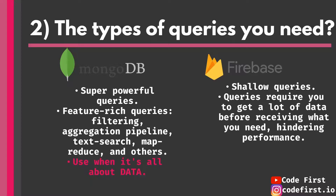If your app is really data-centric and data is super important to you, go with MongoDB. Firebase, on the other hand, has shallow queries. With the real-time DB you have to flatten your data and can't go very nested, and the queries are not as powerful. When I switched to MongoDB from Firebase in my project, I found so much more querying power at my fingertips. So if you need really good queries, definitely go with MongoDB.